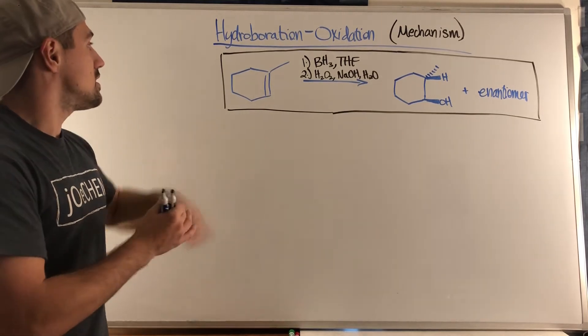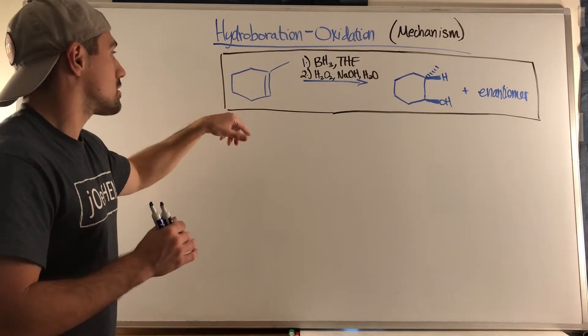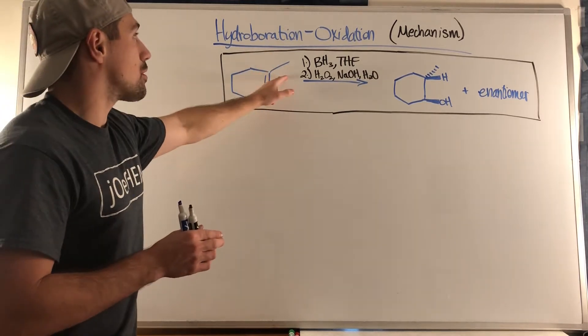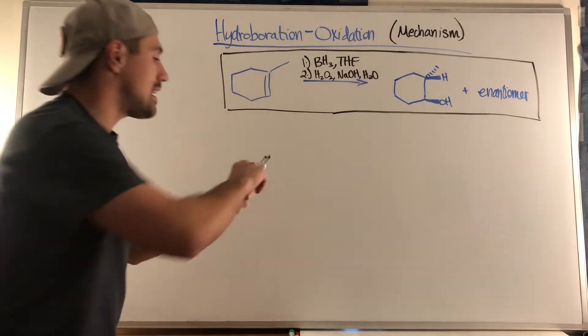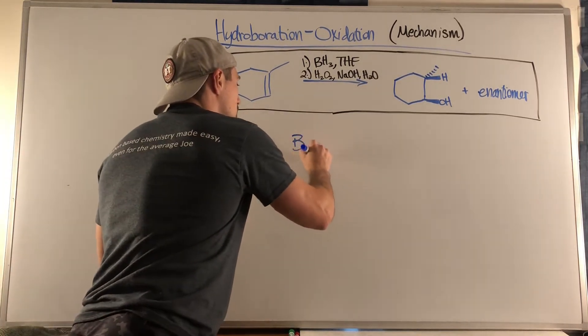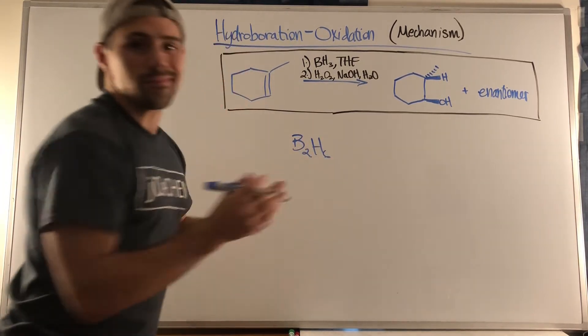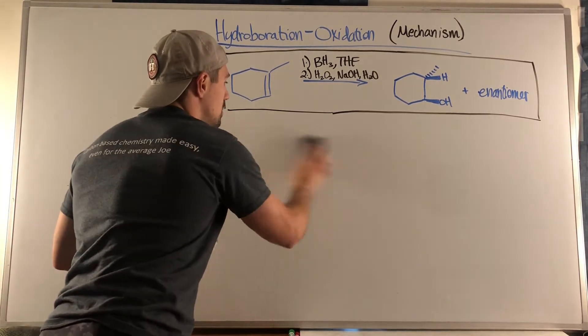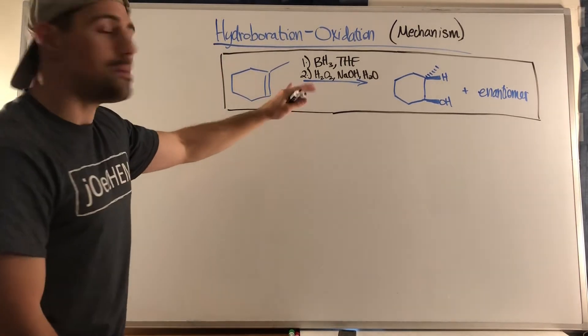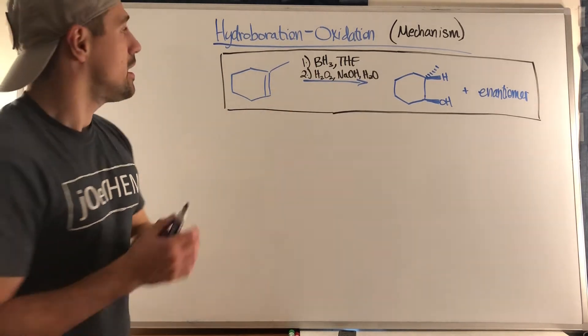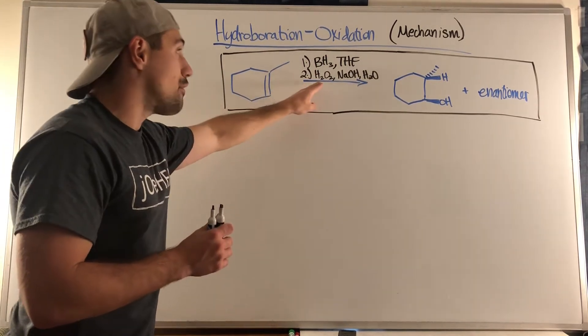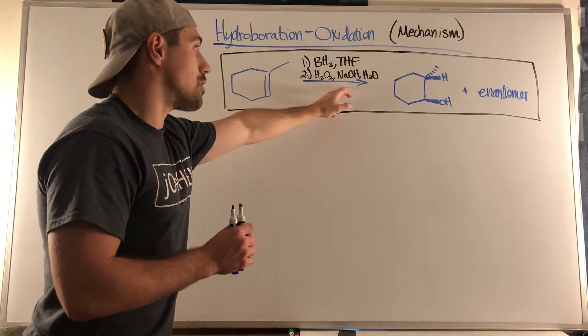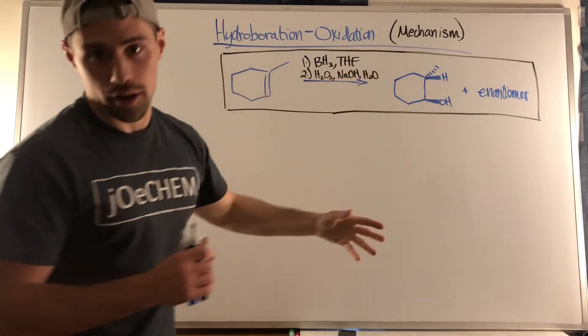So if we see here, we have this lovely cyclohexene derivative with this methyl group, the hydroboration oxidation, it'll be a first step of boron. You may see it as B2H6. Don't worry. As long as there's boron involved, you're doing a hydroboration oxidation. THF may be included. It may not. It's just a solvent. And the second step will always have hydrogen peroxide. That's a must. And you will see a source of hydroxide as well as water.